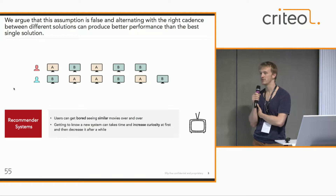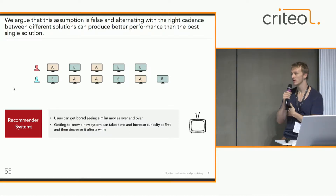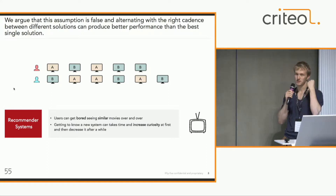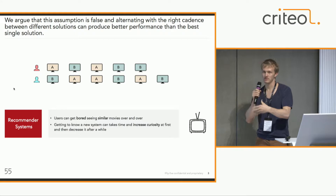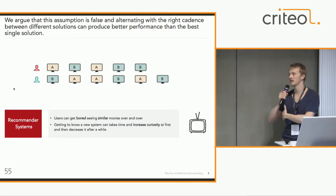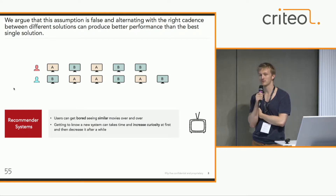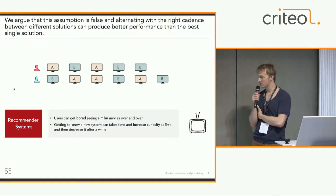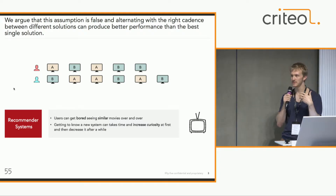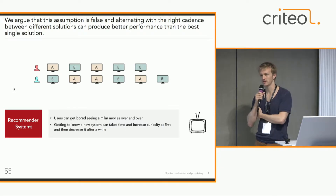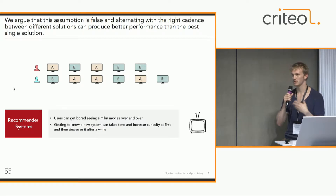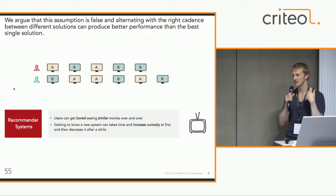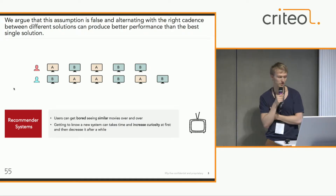For instance, a user can get bored of how a recommender system works because of the interface, or because the system is really good at something in particular — it performs well at the beginning but then the user gets bored. On the contrary, at the beginning it might take a while to get to know the system, so curiosity increases and performance increases, but after a while the user gets bored and performance decreases again. But if you wait and don't show the system to the user, the performance will increase back.